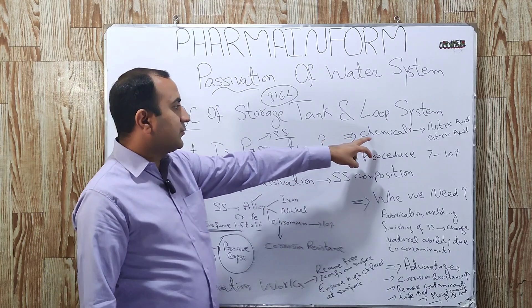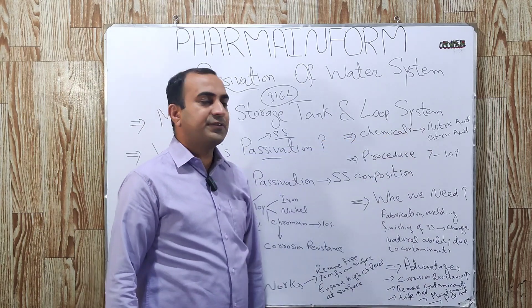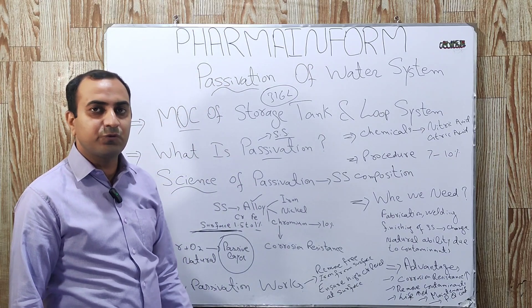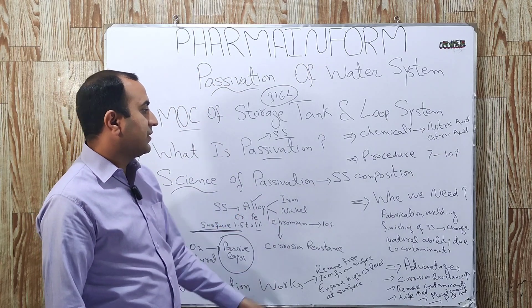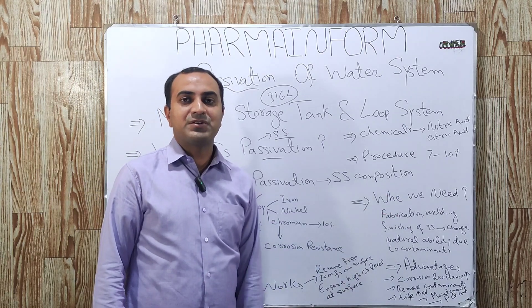Which chemicals are used for passivation? Nitric acid or citric acid are usually used for the passivation.